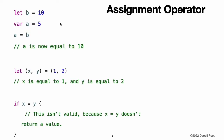The assignment operator, a equals b, initializes or updates the value of a with the value of b. If the right side of the assignment is a tuple with multiple values, its elements can be decomposed into multiple constants or variables at once. Unlike the assignment operator in C and Objective-C, the assignment operator in Swift does not return a value. This feature prevents the assignment operator from being used by accident when the equal to operator with two equal signs is actually intended. By making if x equal y invalid, Swift helps you to avoid these kinds of errors in your code.